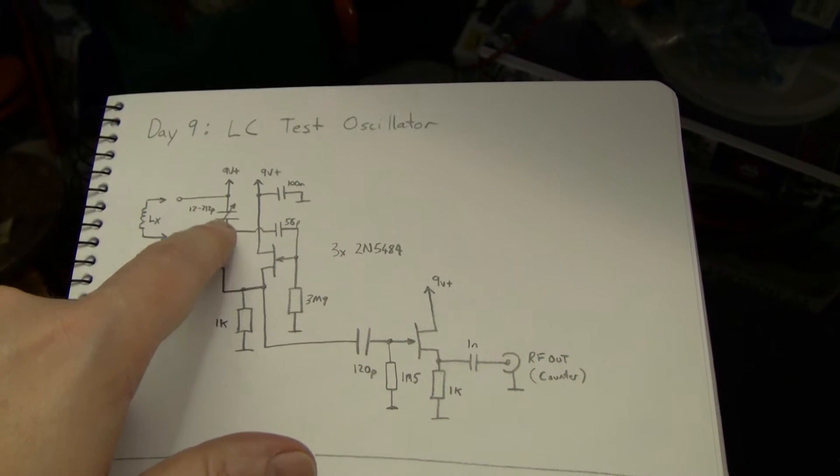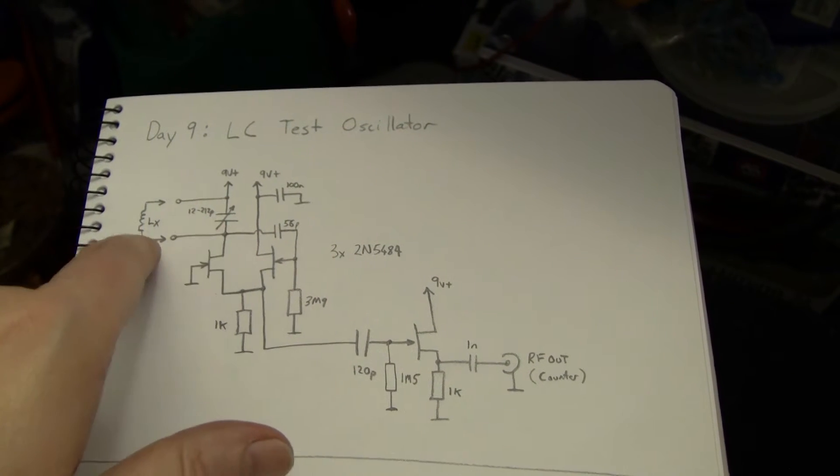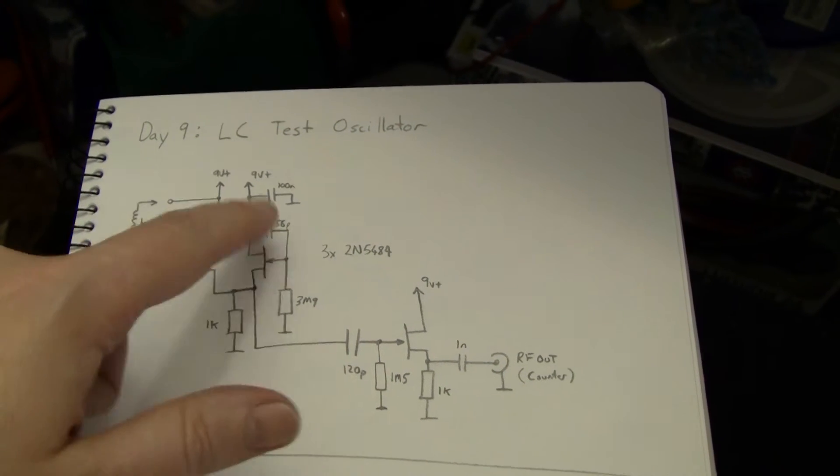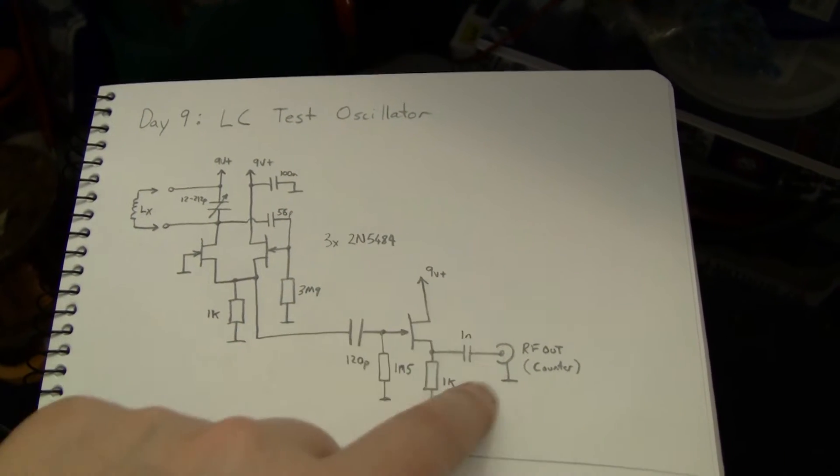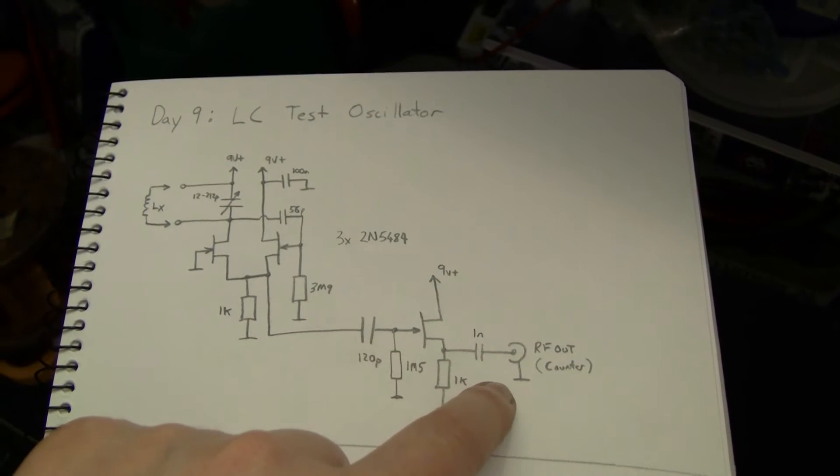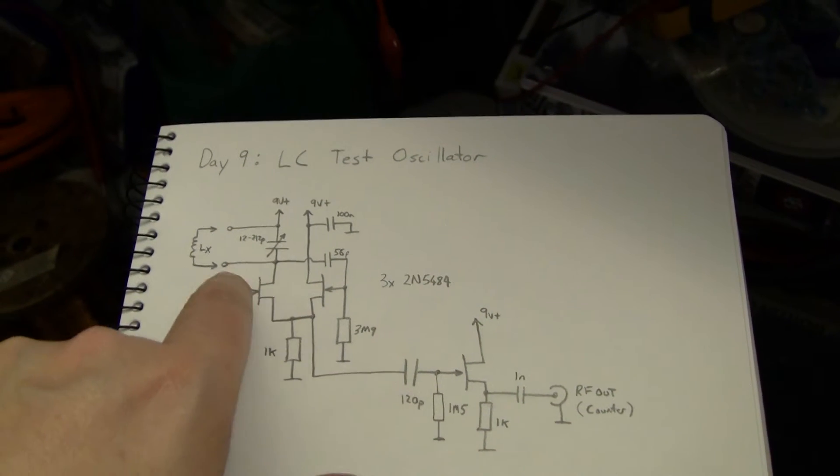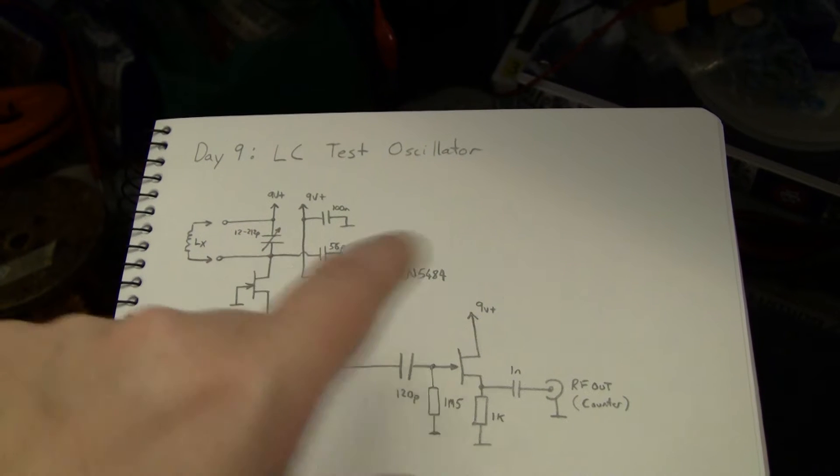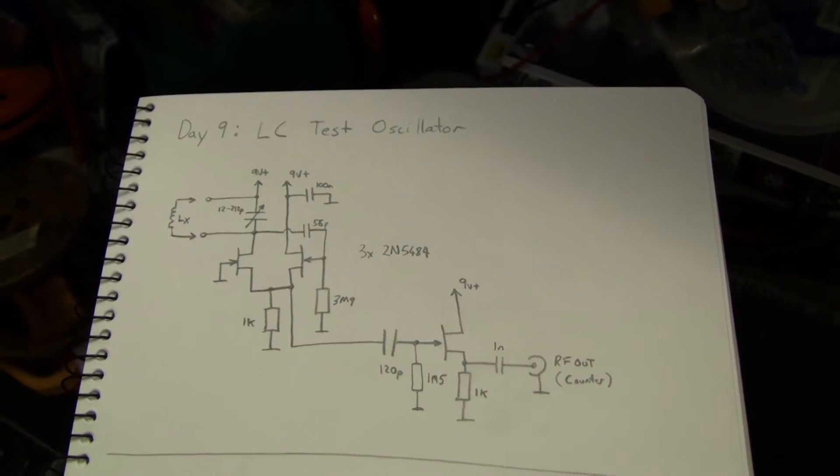So if you put a variable capacitor here and an inductor, you can measure the frequency of the circuit through a frequency counter. I've put a buffer on it here to drive my frequency counter. Then you can get a reasonable idea of the inductance, and it can also be very useful just as a signal source.